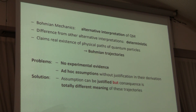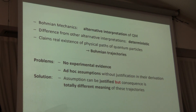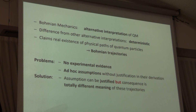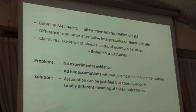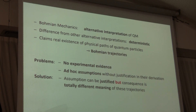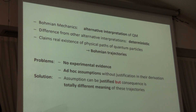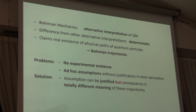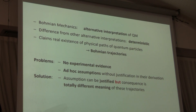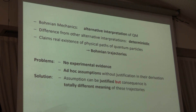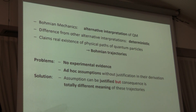Bohmian mechanics is one of many alternative interpretations of quantum mechanics. The particular point about this one is it tries to find a deterministic formulation of quantum mechanics, and it claims that there exist real physical paths of real particles following this path, which in principle should also be possible to find experimentally. But so far no experiment has been able to detect this. I will show you that what enters into the definition of these trajectories has a problematic aspect, how you can solve it, and what the consequences will be.